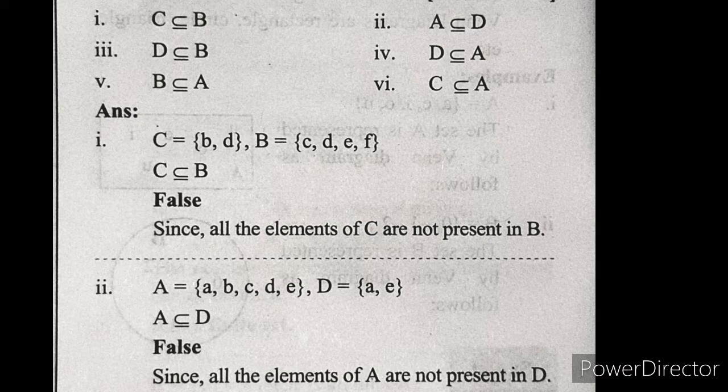Next: A is a subset of D. Elements of set A are A, B, C, D, E. Elements of D are A and E. A is a subset of D means all elements of A should be present in D, which is not possible because set A is bigger than D — it has more elements. D is missing B, C, D from A. So this is also false. Next: D is a subset of B — this is also false because A is absent in set B, so all elements of D are not present in B.